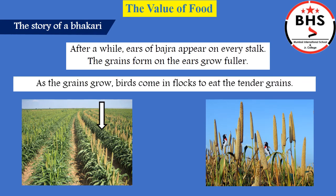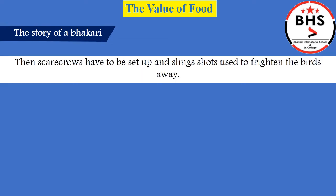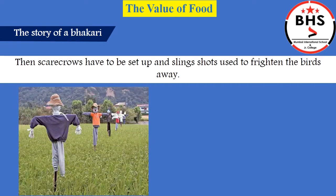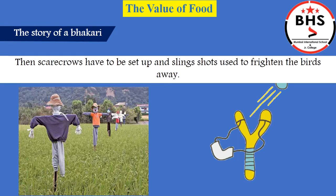As the grains grow, birds come in flocks to eat the tender, soft grains. To protect the grains from birds, scarecrows have to be set up, and slingshots are used to frighten the birds away.